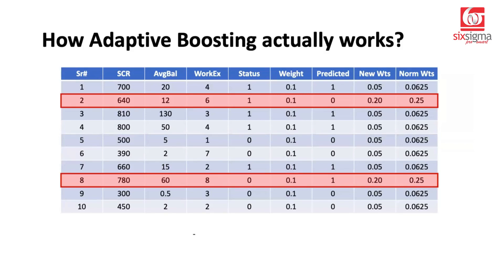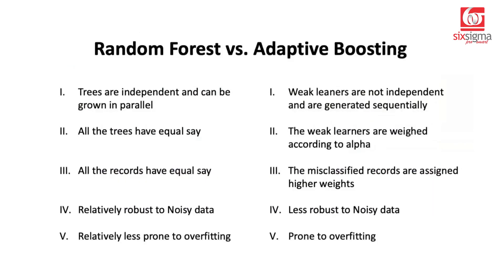So just to summarize, we've seen two approaches which use multiple trees. One was random forest and the other we've discussed now is adaptive boosting. What is the main difference between these two approaches? First of all, in random forest we try to keep the trees independent and they are grown in parallel. Whereas in case of adaptive boosting, the trees are not independent, they are generated sequentially, not in parallel. Second point is all the trees have equal say in case of random forest. There is no concept of a relatively high weightage being assigned to a particular tree.